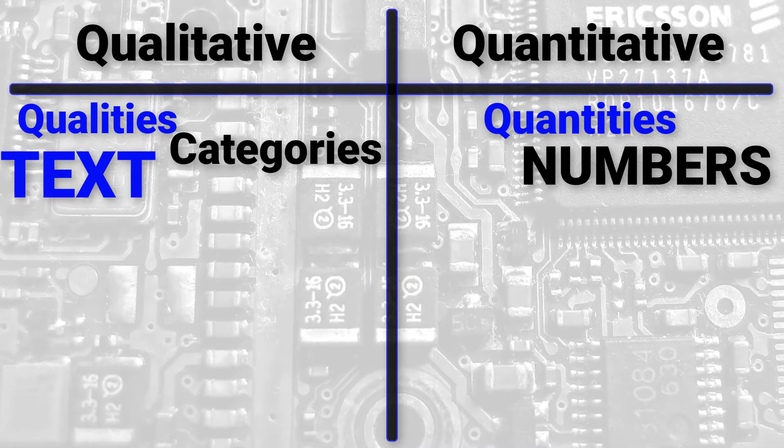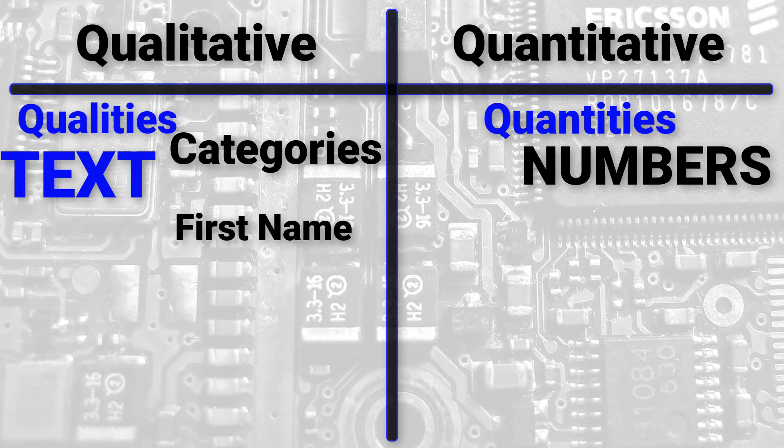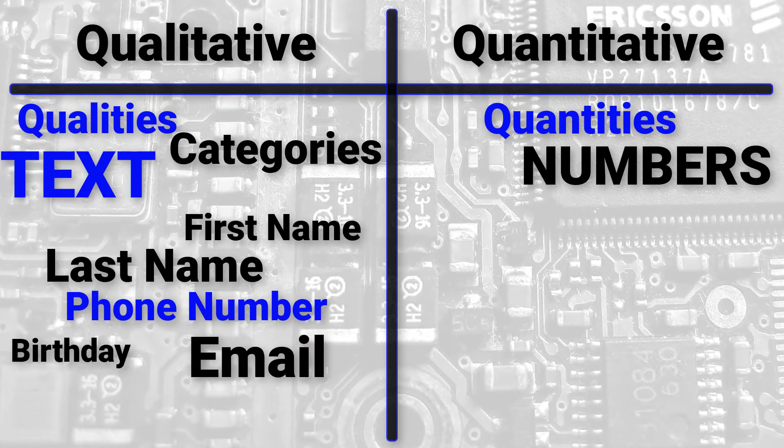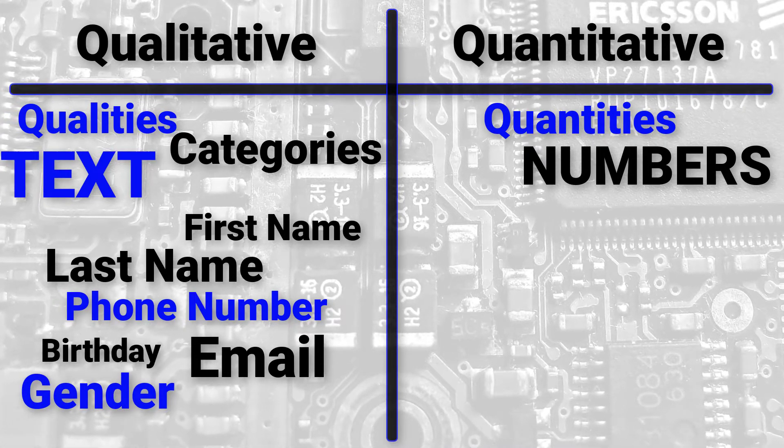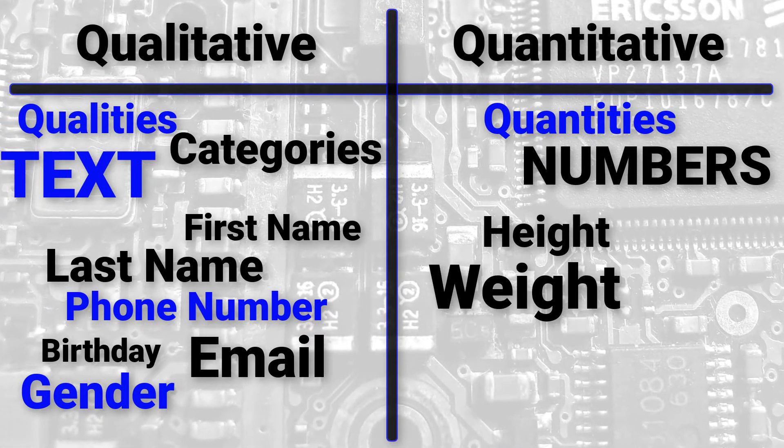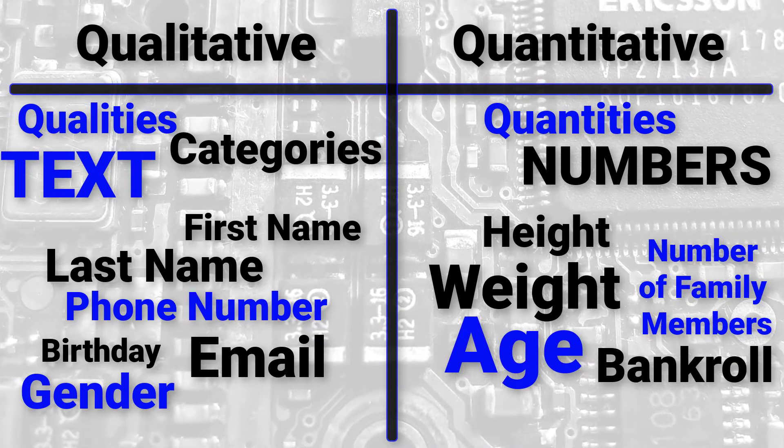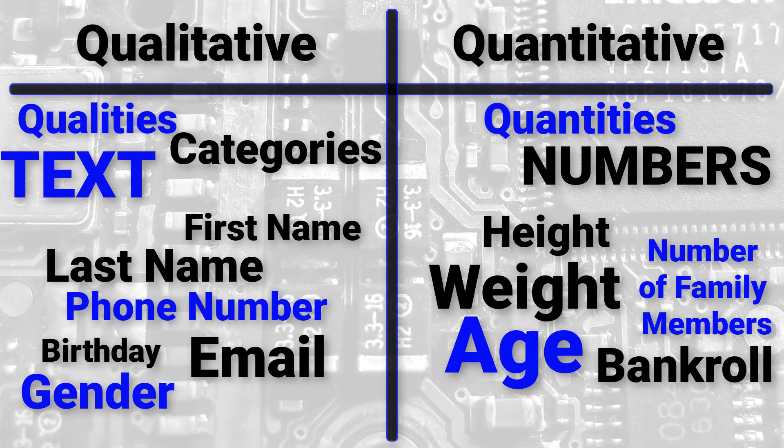Let's look at some approachable examples that we are all probably familiar with. On the qualitative side we have things like our first name, our last name, phone number, email, birthday, and gender. On the quantitative side we have things like our height, our weight, our number of family members, our age, and our bankroll. These qualities and quantities are used to represent us as humans inside computer programs.